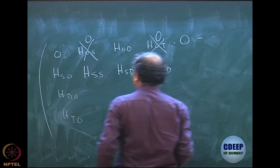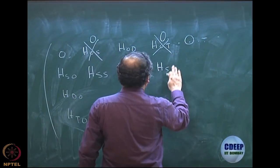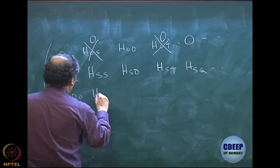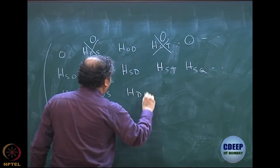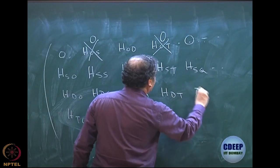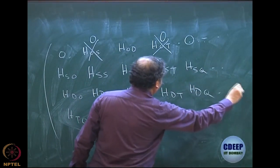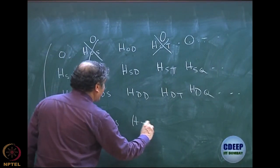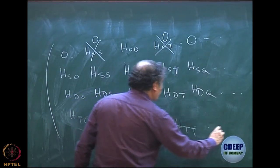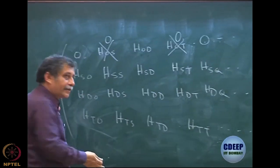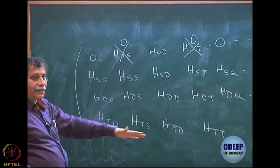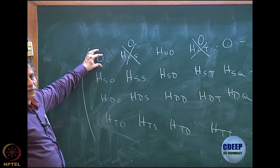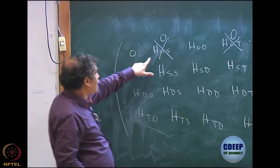From the doubles row we have Hsd, Hst, Hsq and so on. Similarly, doubles with Hartree-Fock, doubles-singles, doubles-doubles, doubles-triples, doubles-quadruples and so on. We can write the matrix in block form depending on how many excitations we include. The Hartree-Fock to Hartree-Fock block is the only one-dimensional block; the rest are either rectangular or square.